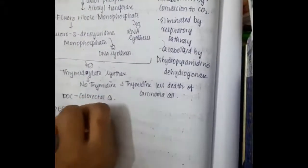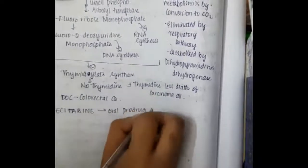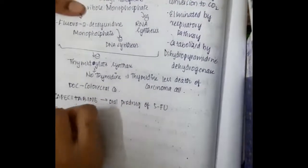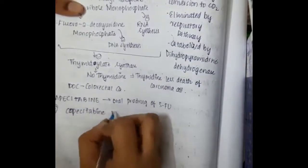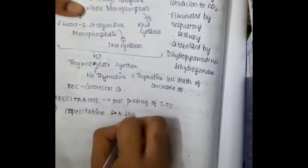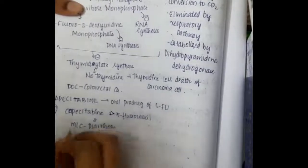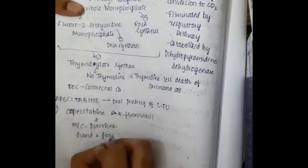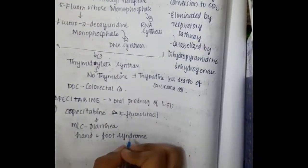Capecitabine is an important oral pro-drug of 5-fluorouracil. Side effects of capecitabine include diarrhea as the most common side effect, and it also causes hand and foot syndrome.